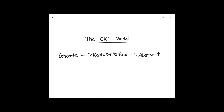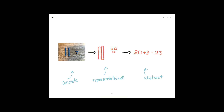If you're not already familiar with the CRA model, it is something that we see often in math instruction. It means concrete, representational, abstract — or sometimes you'll hear concrete, pictorial, abstract. It refers to a sequence, a path to move our students along in their learning. We often see it explained in books or research publications where we start with hands-on materials, move into drawings or pictures, and then move into digits and symbols.